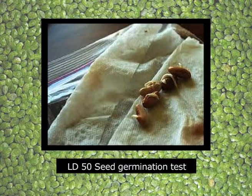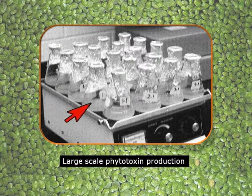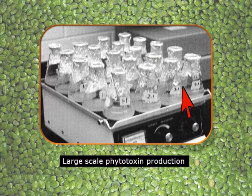We can also determine how many seeds have not germinated and thereby calculate the LD50 concentration, indicating the level of toxicity. We can also study a specific biochemical pathway like the ornithine production pathway to determine the level of ornithine accumulated. When a toxin is produced in the lab it is normally produced in small amounts, but when produced at industrial scale it is produced in bulk in big flasks, normally grown in a mechanical shaker.